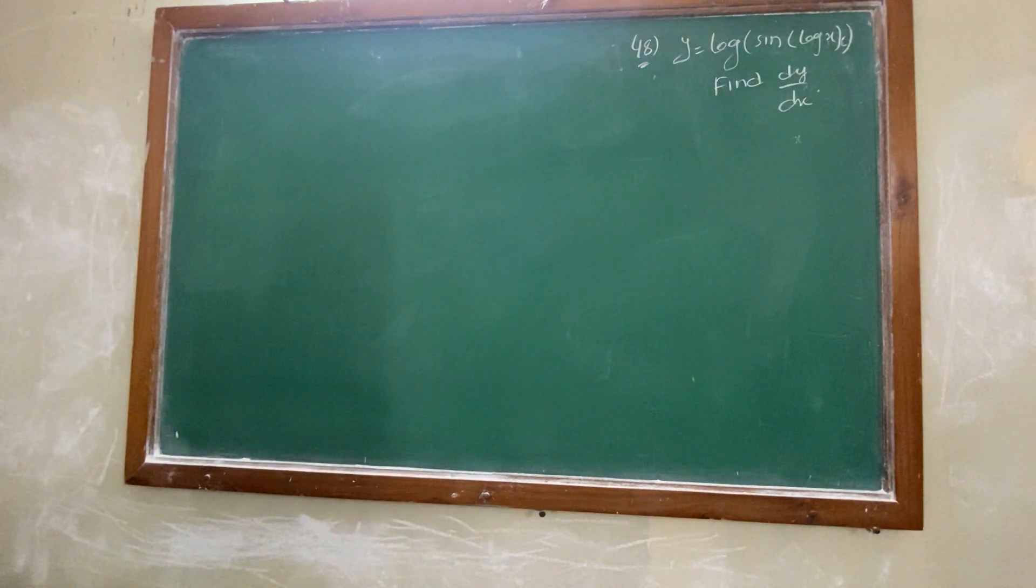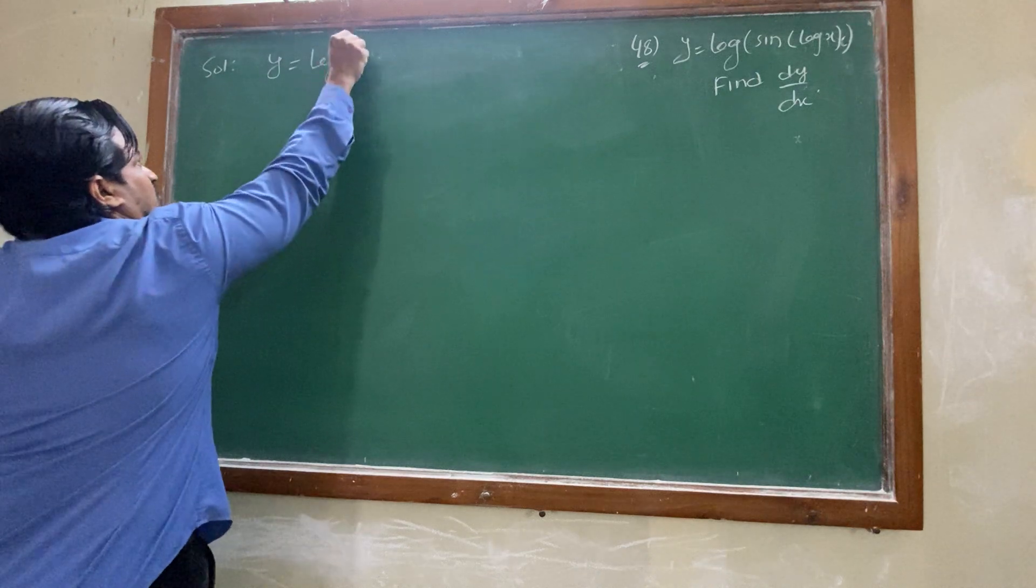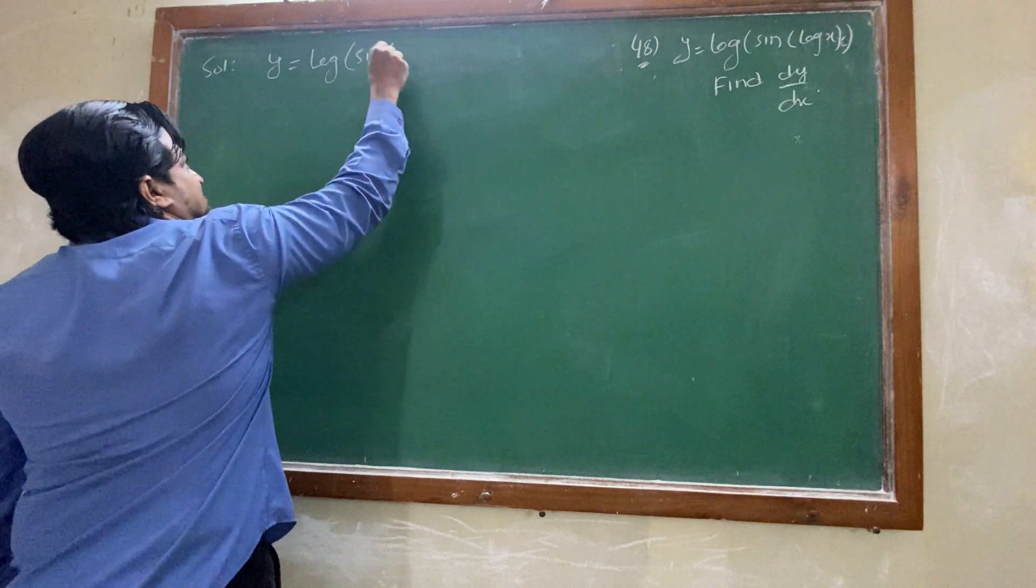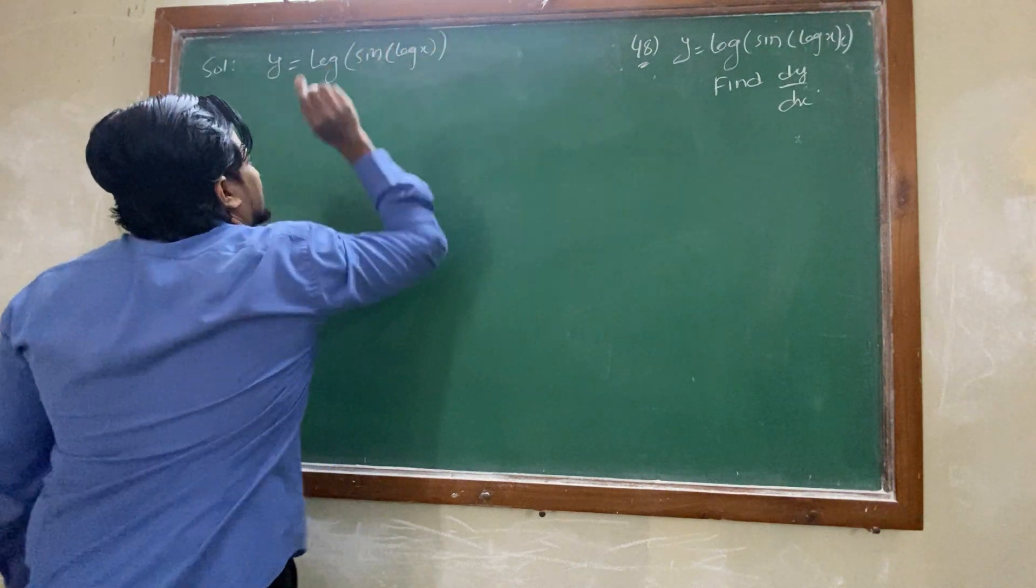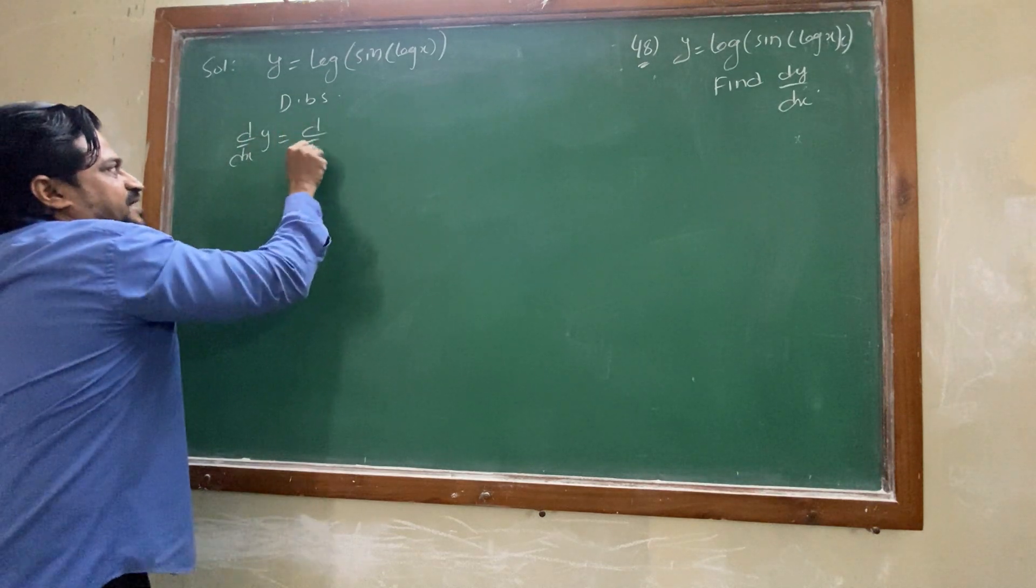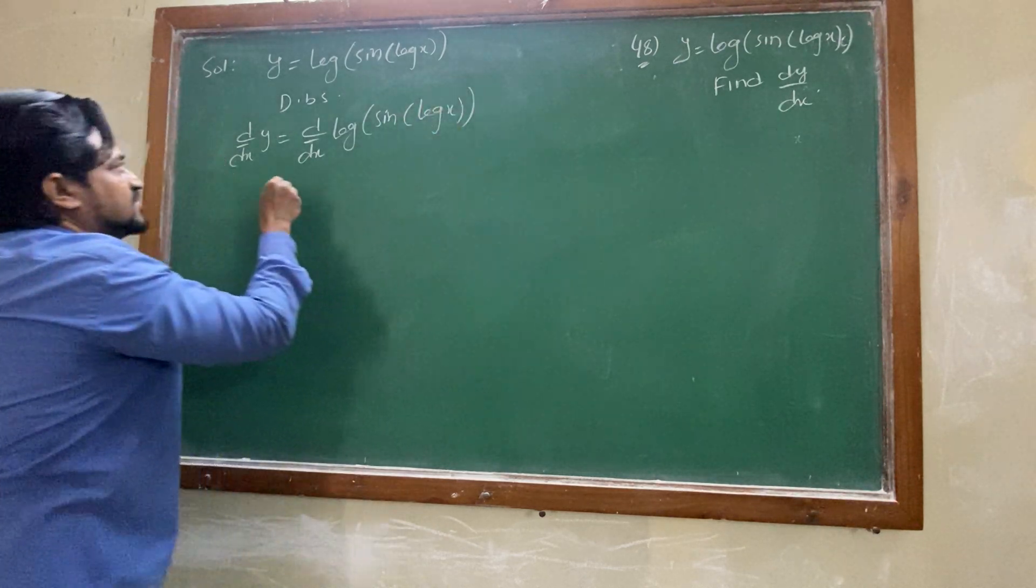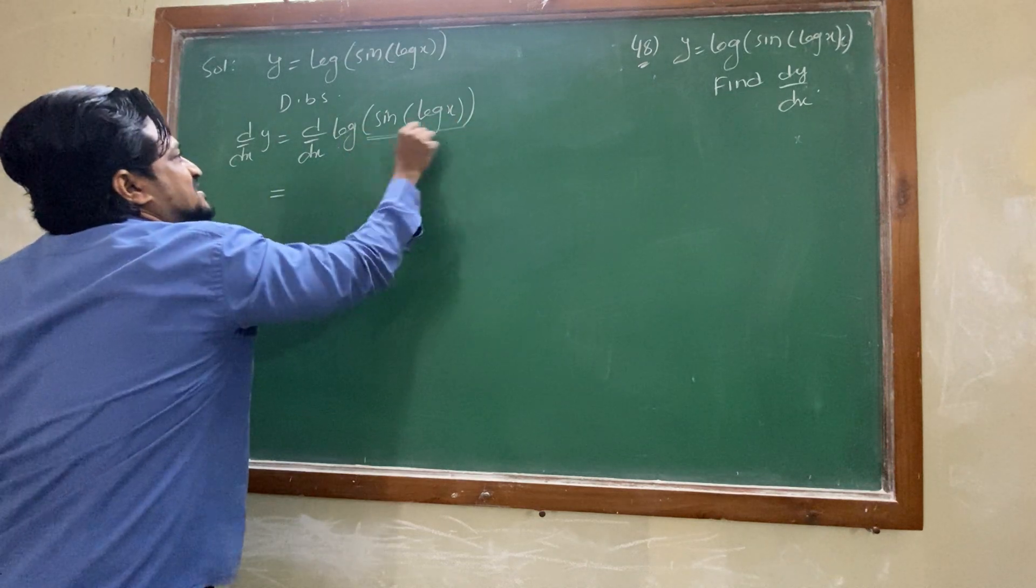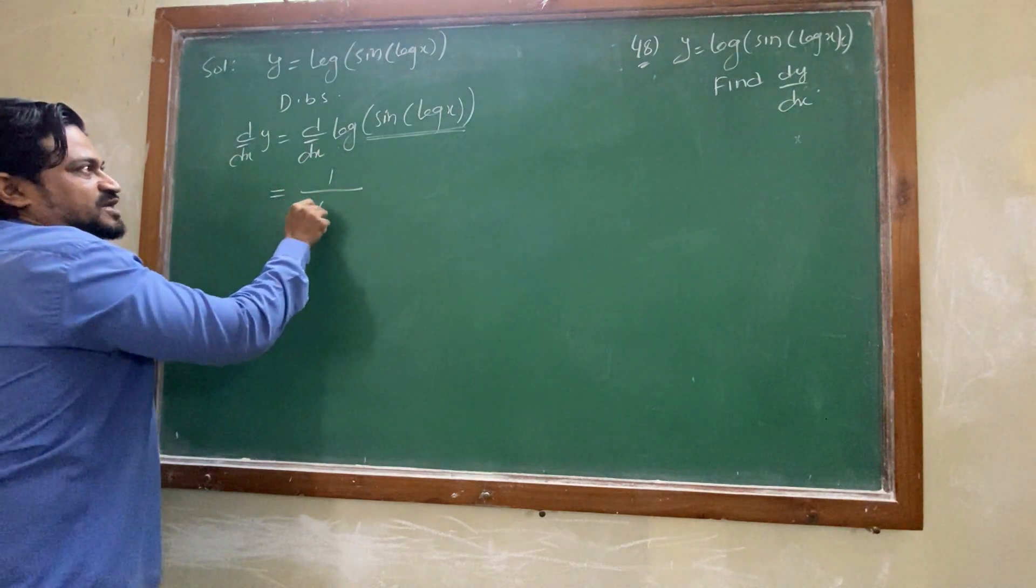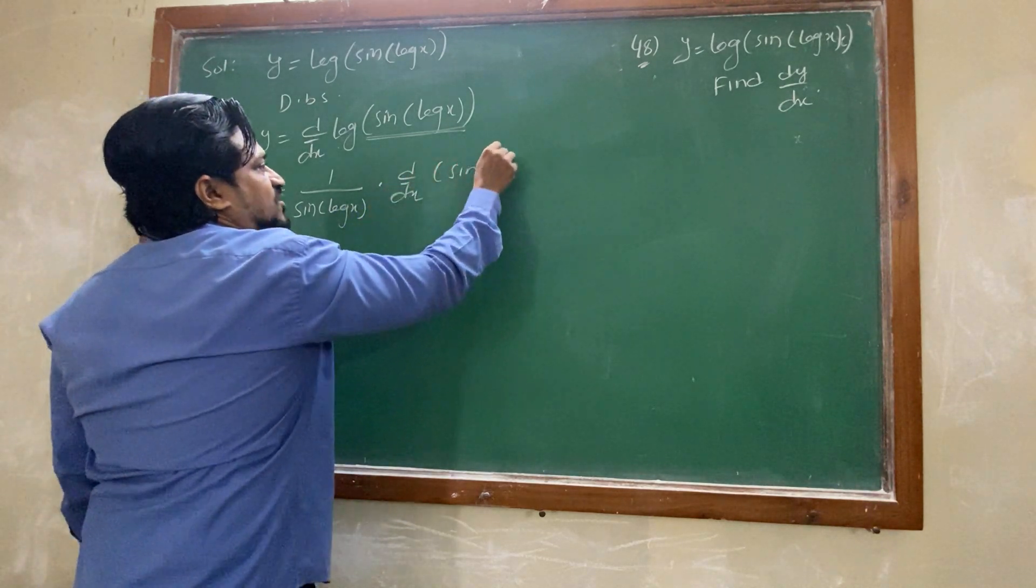Y equals to log of sin of log x. Find dy by dx is given. Log of, see this log doesn't have x. Log of this is x value of this one. Then sin doesn't have x. Sin x is this value. Differentiating both sides with respect to x. D by dx of y we have to consider, then d by dx of log of sin of log x. Now log, this value we will consider as x. Log to the thing is x. Log x derivative is 1 by x. Whatever we thought as x we have to write here. Then again we should write in terms of d by dx. Same thing, sin of log x.